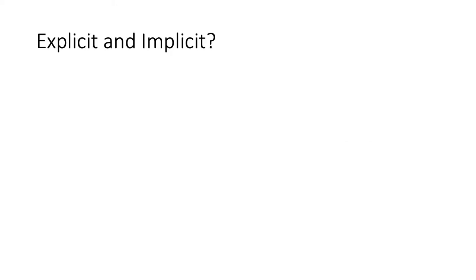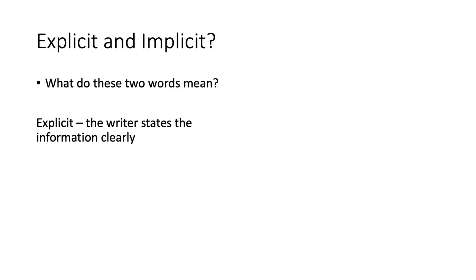Let's remind ourselves of the difference between explicit and implicit, because that is really key to the next question where we're going to look at writing summaries. What do these two words mean? Explicit means the writer states the information clearly — it's obvious and absolutely written in front of you. Implicit means reading between the lines, working out what the writer might be suggesting, and it's that word 'suggesting' that's really important.